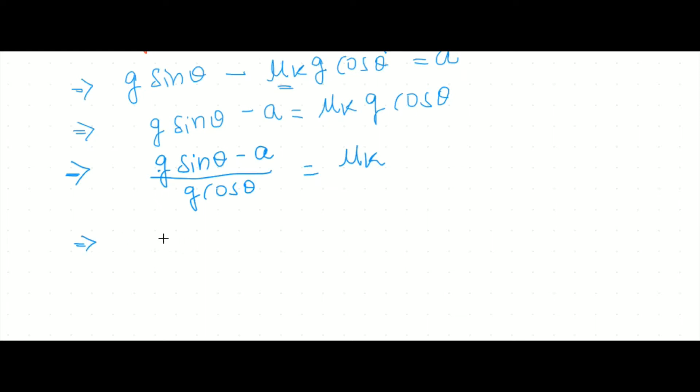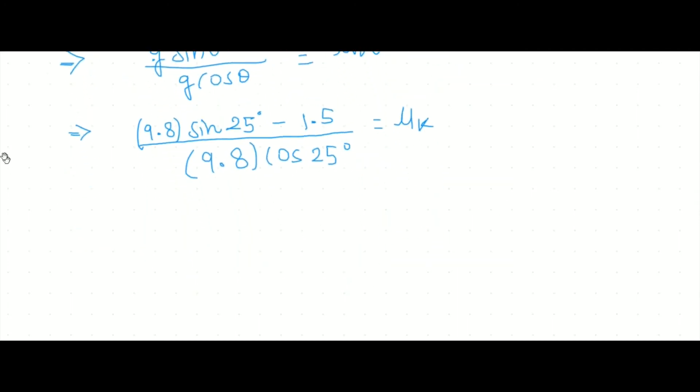Now we will plug in the values of g, theta, and a. So the g is 9.8 meters per second squared. The value of theta is 25 degrees. The value of a is 1.5 meters per second squared over the value of g, which is again 9.8, and the value of theta is 25 degrees. So this is equal to mu k. If we will solve this expression, we will get mu k or the coefficient of friction as 0.2974. So this will be our final answer.